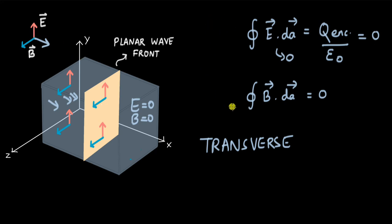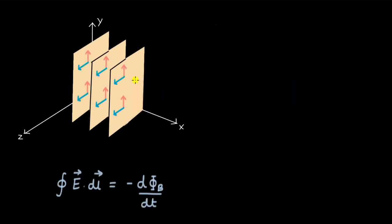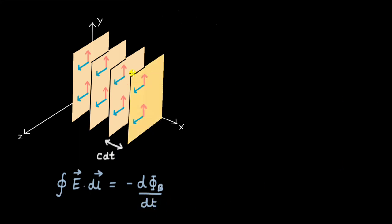To satisfy the first and second equations, the electric and magnetic fields must be perpendicular to the direction of propagation — none of their components can be parallel to it. Therefore, the wave must be transverse in nature. That is the first insight into the nature of an electromagnetic wave. Now let's test whether this wave satisfies Faraday's law. The wave fronts are moving to the right, and in a small time interval Δt this wave front moved a distance of c·Δt.